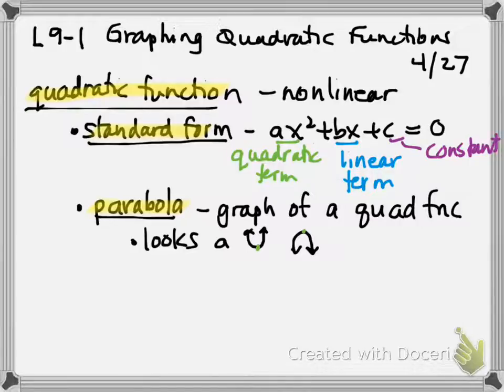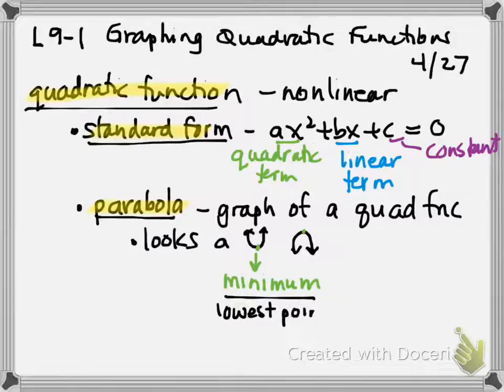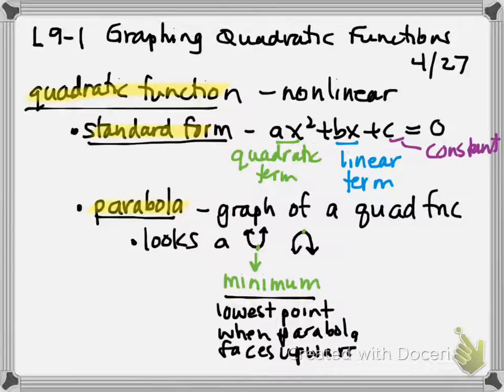Each of those points has a name. If you have a lowest point, think about it this way. If you have an entry-level job, you usually get paid minimum wage. So this is called a minimum. When the point is at the bottom, this is called a minimum. A minimum is the lowest point when parabola faces upward. Some people look at it as being a smile.